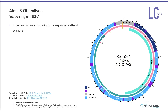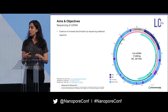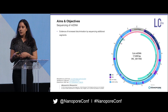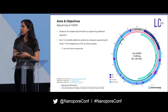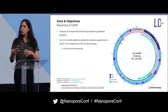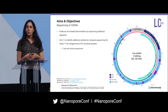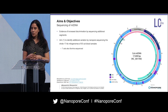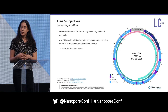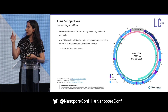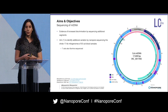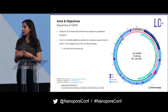There has been evidence of increased discrimination by sequencing additional segments of the mitochondrial genome, including studies looking at additional parts of the control region and cytochrome B. So our first aim was to build a new database, looking at the additional variation we could get by sequencing the whole mitogenome of 93 cat blood samples. We did this using two overlapping amplicons — the primers are shown in the pink and green arrows — which also allowed us to avoid the NUMT.